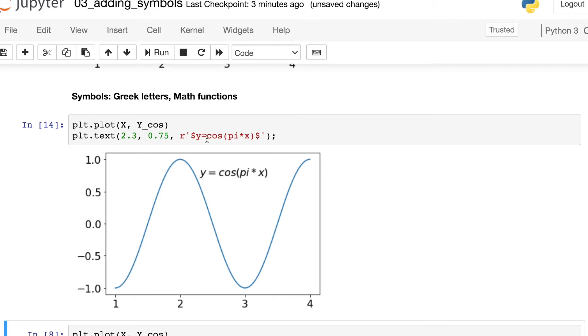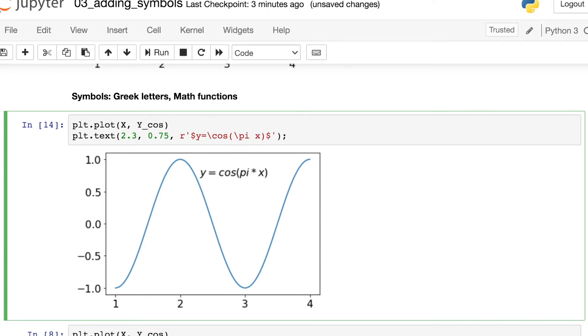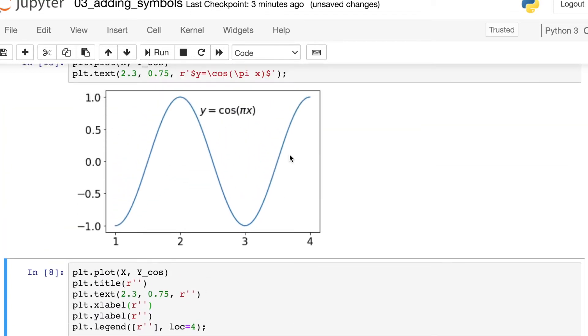It turns out that TeX has a function called backslash cos, which will represent the cosine, as well as backslash pi, which represents the Greek letter pi.